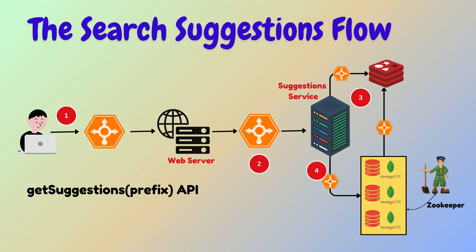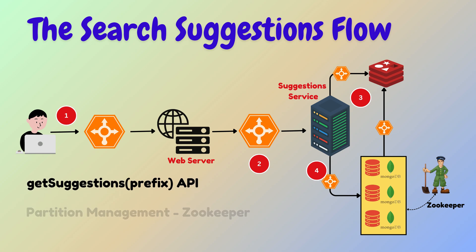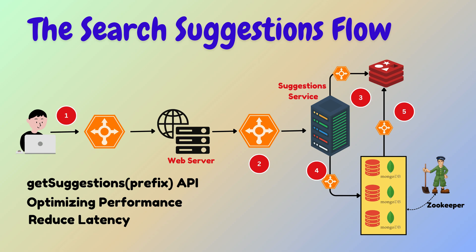If suggestions are not found in Redis, the suggestions service queries MongoDB. The database is partitioned, and partition management is coordinated by ZooKeeper, which ensures the appropriate partition is queried. After retrieving suggestions from MongoDB, the suggestions service updates the Redis cache to store these suggestions for future requests, further optimizing performance and reducing future latency for common queries.